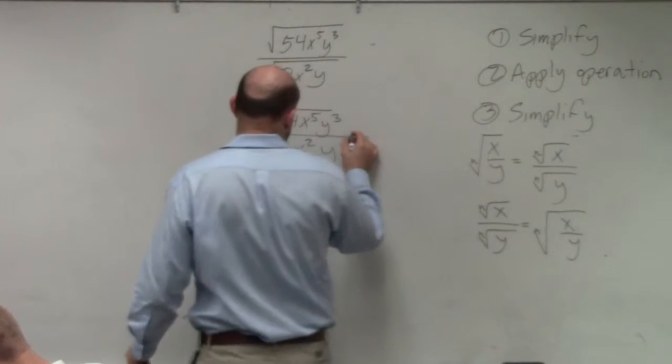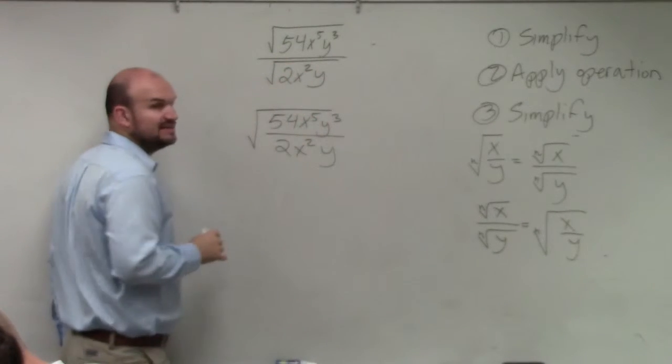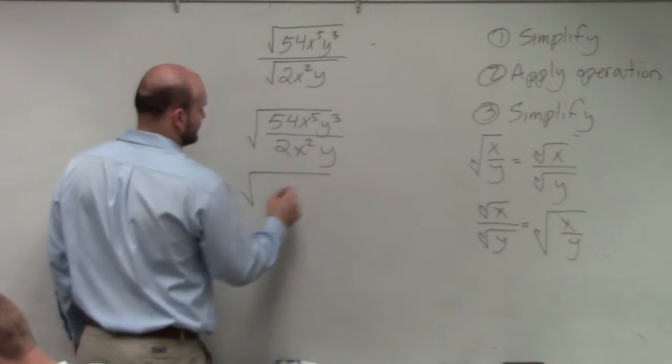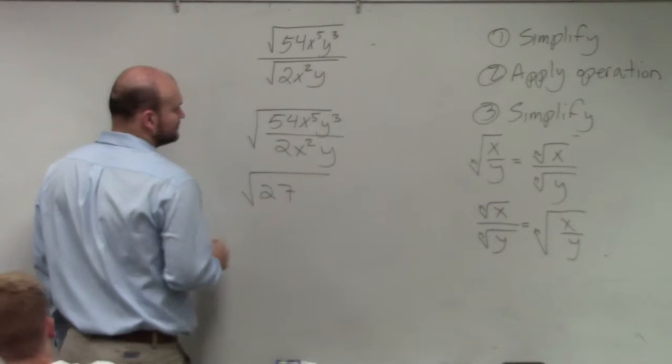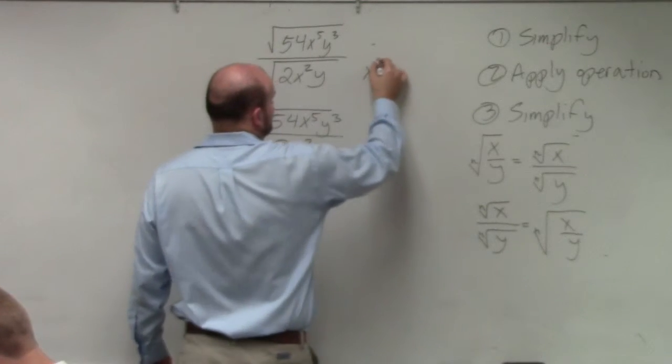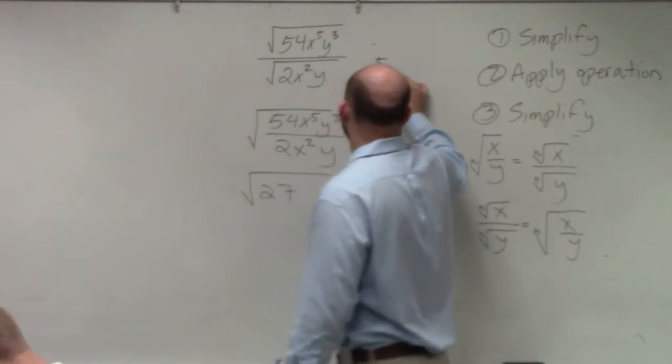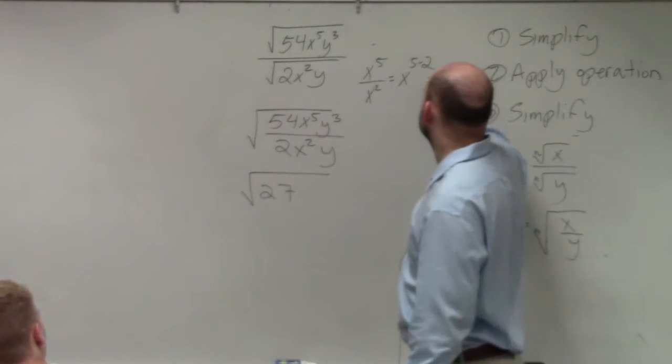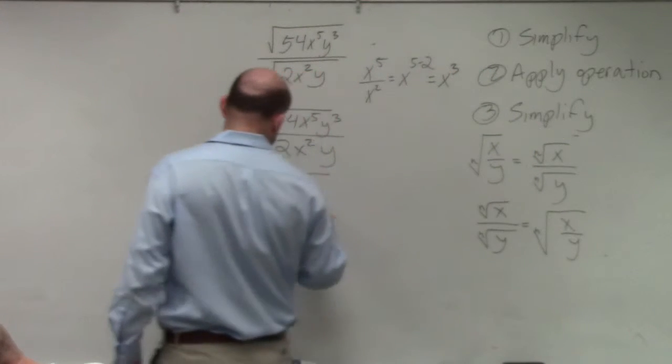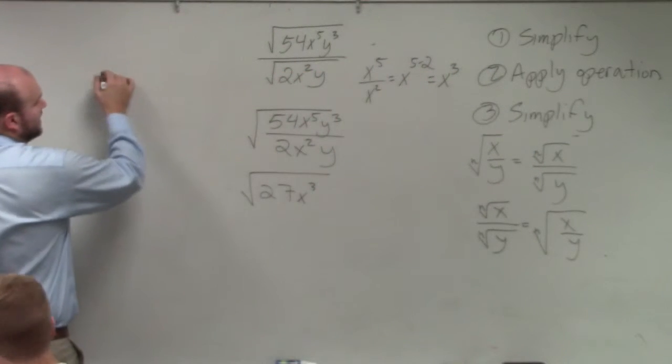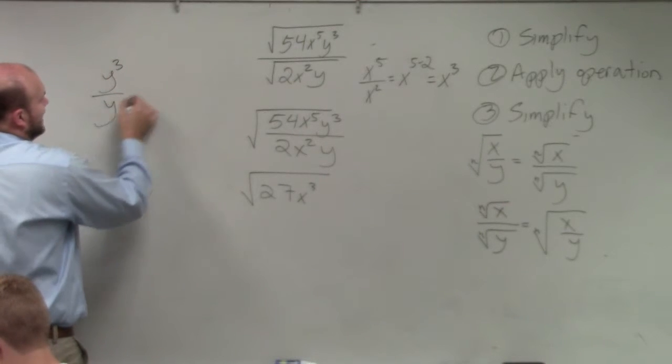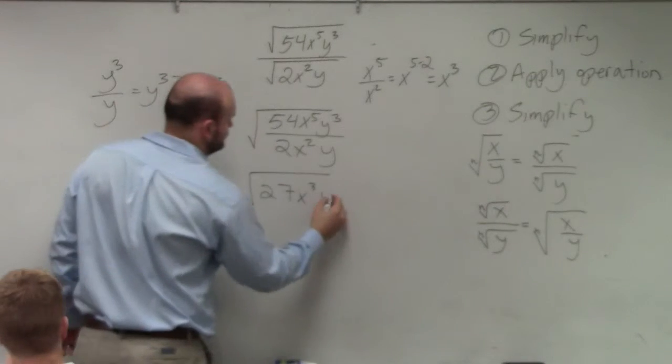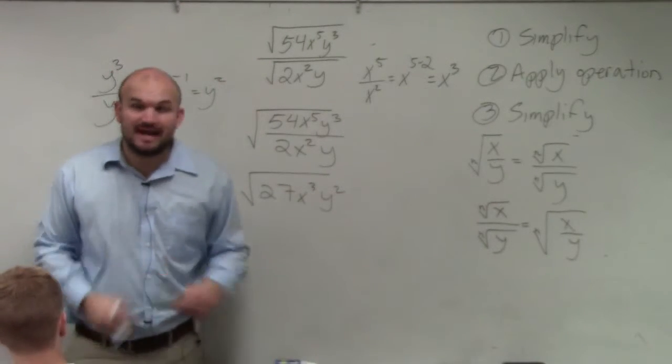So Anthony, what I would write down here is 54 divided by 2. That's now going to leave me with 27. If you guys remember, x to the fifth divided by x squared equals x to the 5 minus 2, which is 3. And I had y cubed divided by y equals y to the third minus 1, which is y squared. Perfect. Now, we applied our operation. We divided, right?